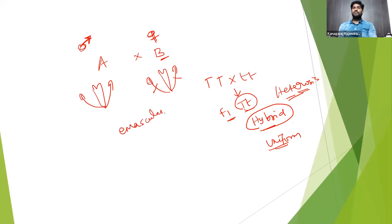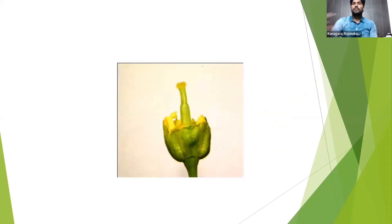So we should promote cross-pollination and avoid self-pollination. That's why the emasculation procedure is important. And this is one emasculated flower — we keep only the female part of the flower.